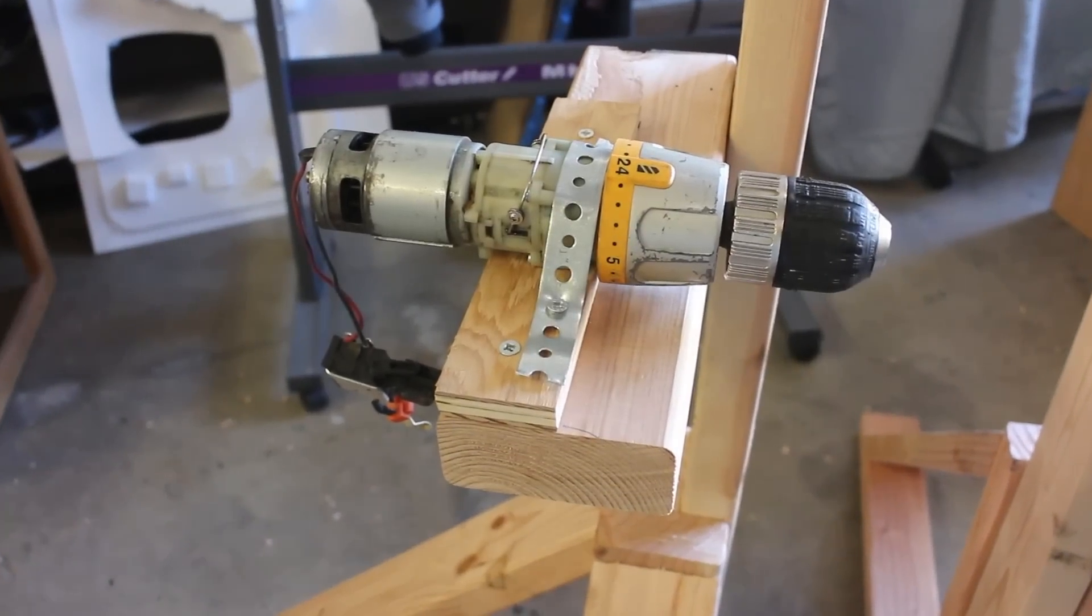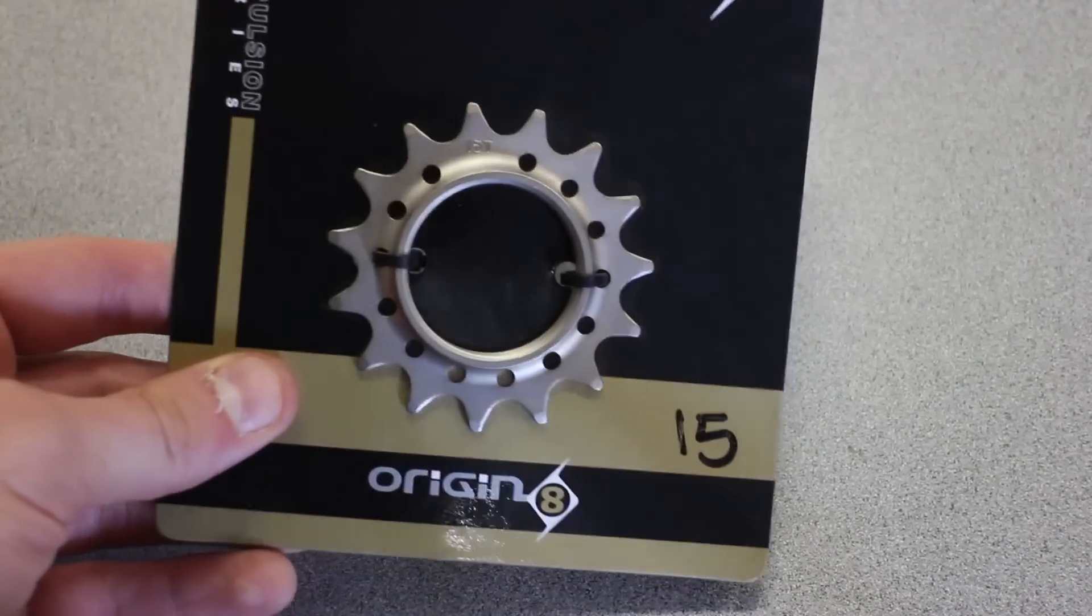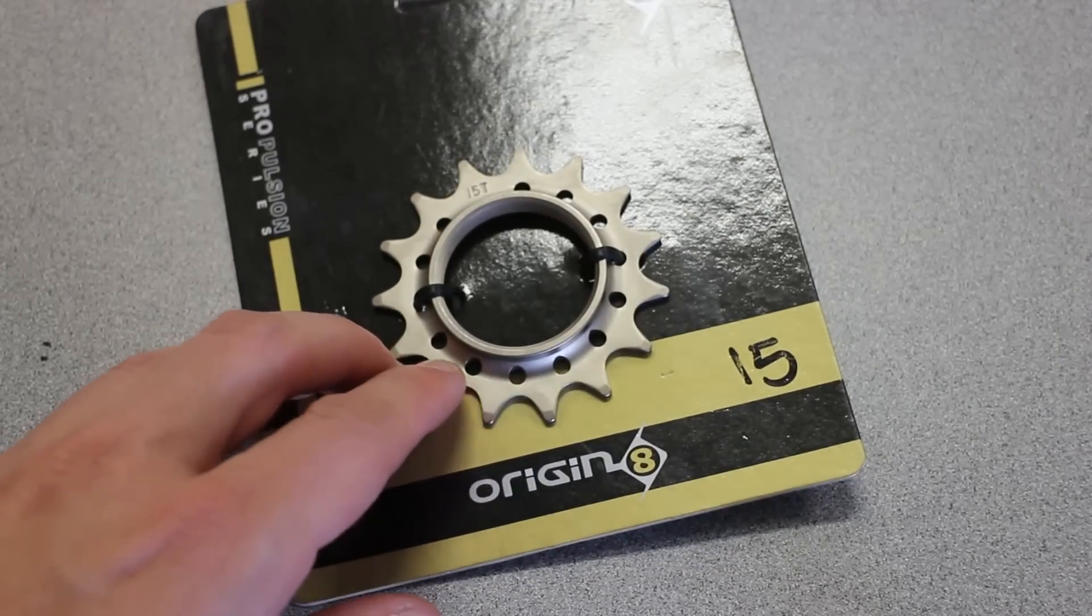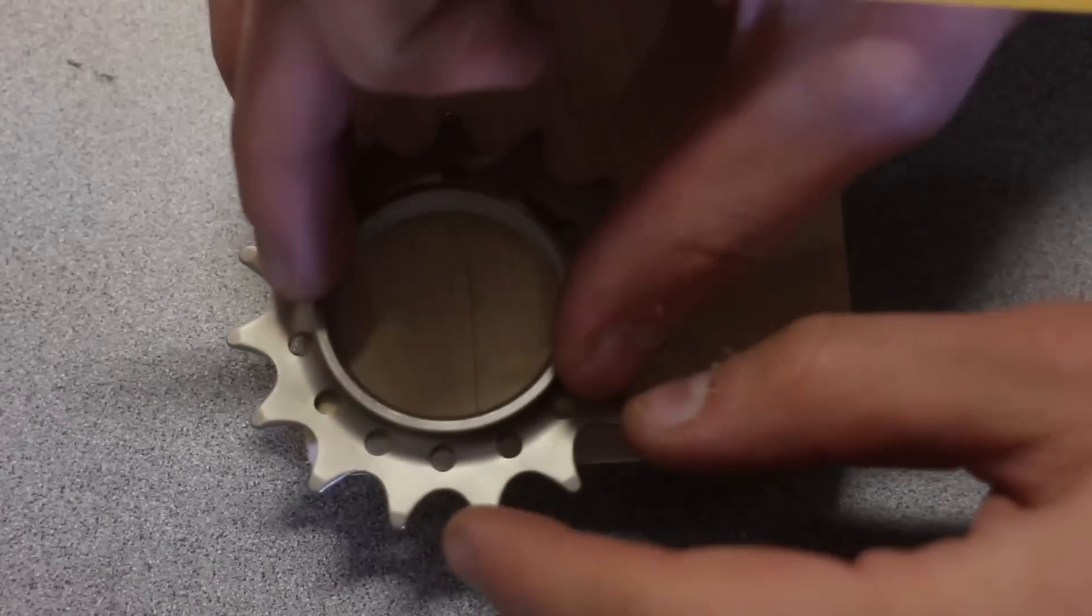We decided to just use plumber's tape. It's not ideal, but it works. Next, we had to figure out how to hook up the motor to the bicycle wheel. We bought this small bicycle sprocket from a local bike shop. Now we just had to figure out how to mount this to the motor.